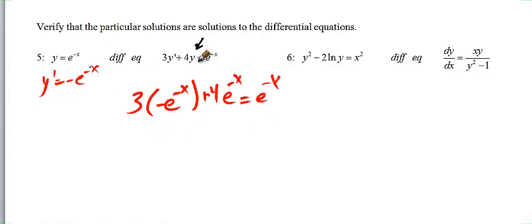Now, this is not always true. When you're verifying it, it may or may not be a true statement. But well, negative 3 plus 4 is 1 e to the negative x, which does match with e to the negative x. It checks out.